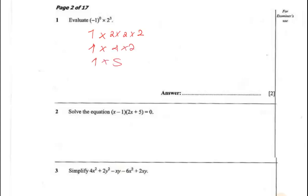Question 2: Solve the equation (x - 1)(2x + 5) = 0. It's already been factorized for you, so just equate each part to zero.